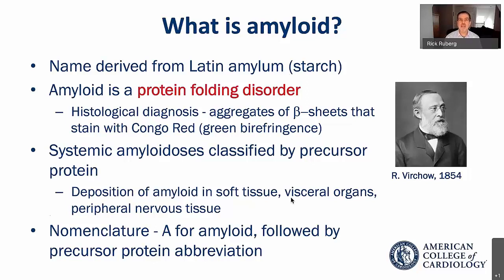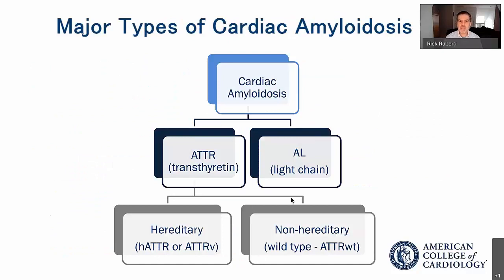A stands for amyloid, and then the protein that misfolds is abbreviated — so ATTR is transthyretin amyloidosis, for example. The major types of cardiac amyloidosis are really two. There are only two precursor proteins that cause the vast majority — well over 95% — of cases of cardiac amyloidosis. There are other rare causes, such as gelsolin cardiomyopathy, but these are quite uncommon.